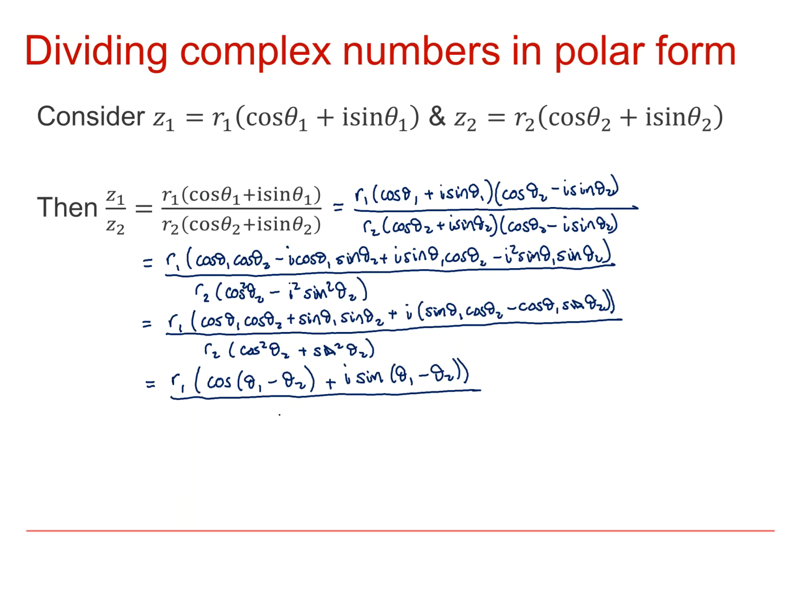And in the denominator, cos squared plus sin squared is 1, so we've just got R2. So, our final result is R1 over R2 multiplied by cos of theta1 minus theta2 plus i sin of theta1 minus theta2.